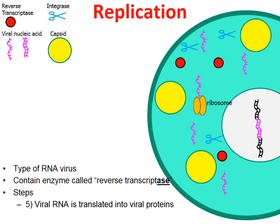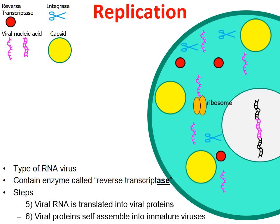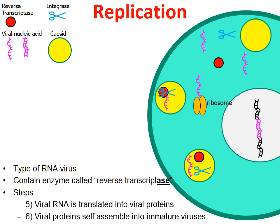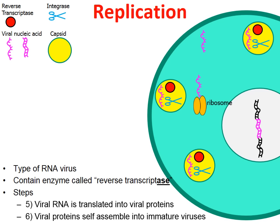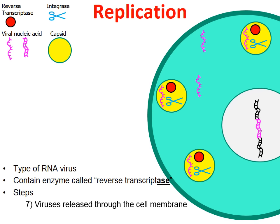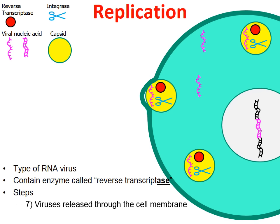Eventually, these viral proteins that the cell's own ribosomes created will self-assemble into immature viruses — new immature retroviruses. These immature viruses are then released through the cell membrane. The cell membrane begins to bud out and bulge out until a retrovirus has been released.